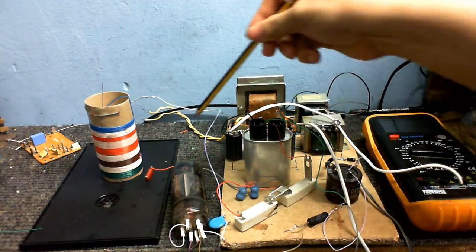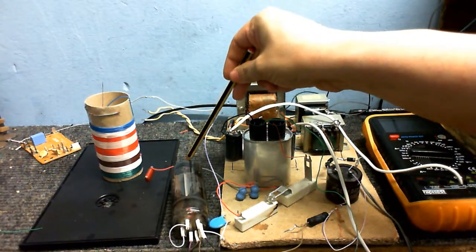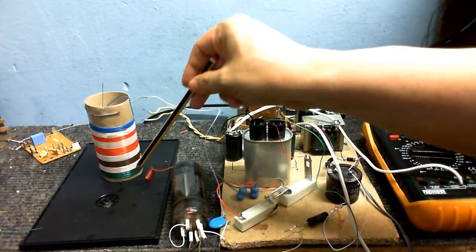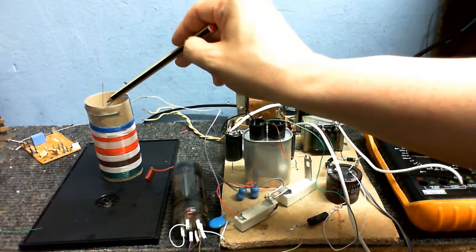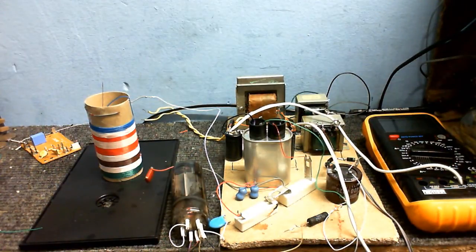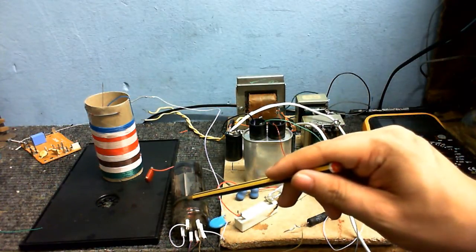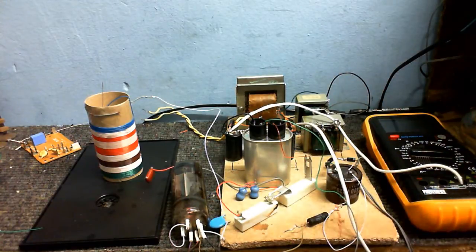Anyway, from there, it goes into the plate of this valve, and also into this capacitor, and then into the bottom of this coil. And the top of this coil is connected to the pin, and the cathode of this valve is connected to ground.